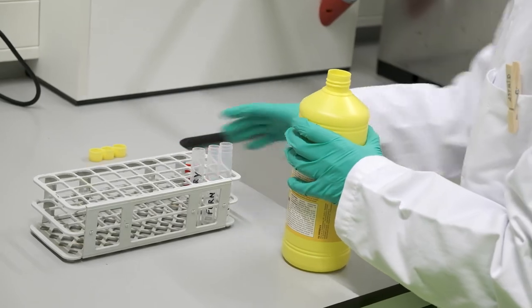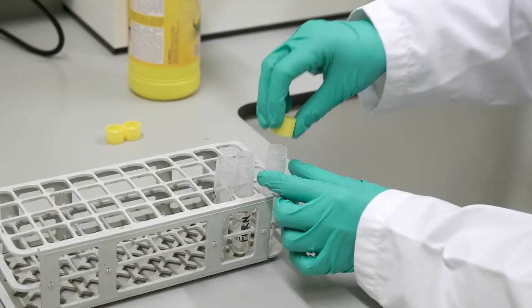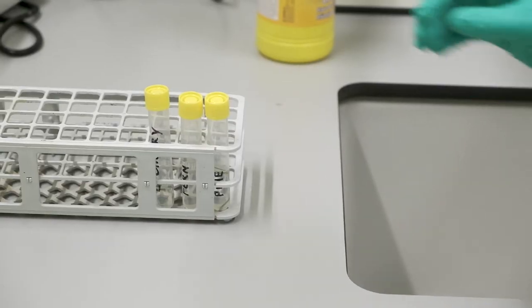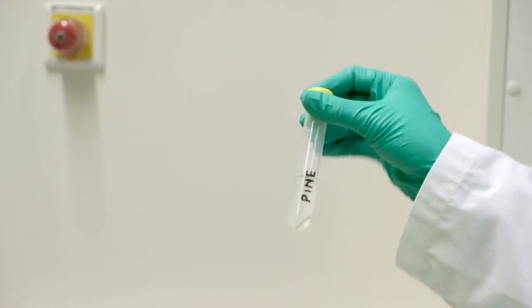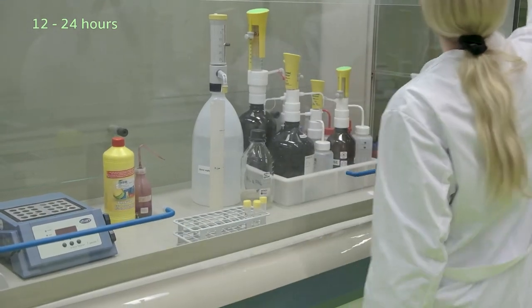And then you put it in bleach in a test tube, and it will bleach out the mesophyll cells, and you leave it for 12 to 24 hours. It depends a bit on the leaf, how long it needs. So it's a bit trial and error and different between how thick your leaf is.